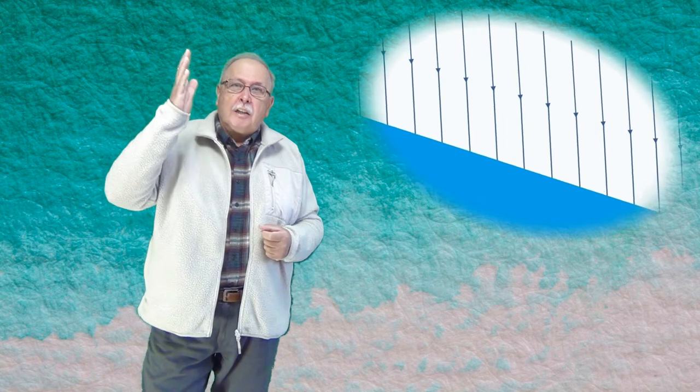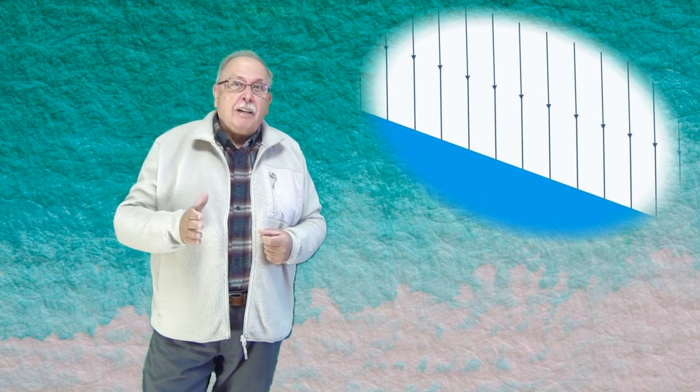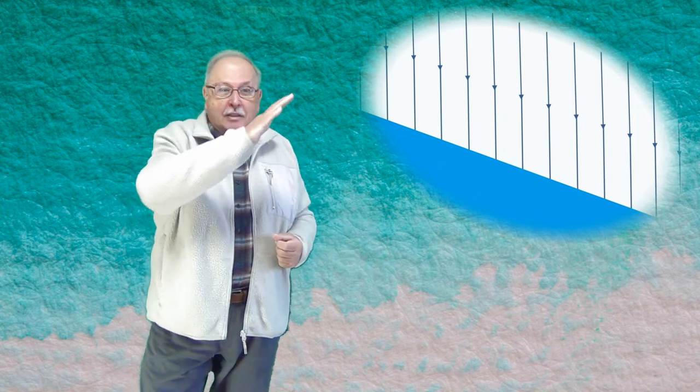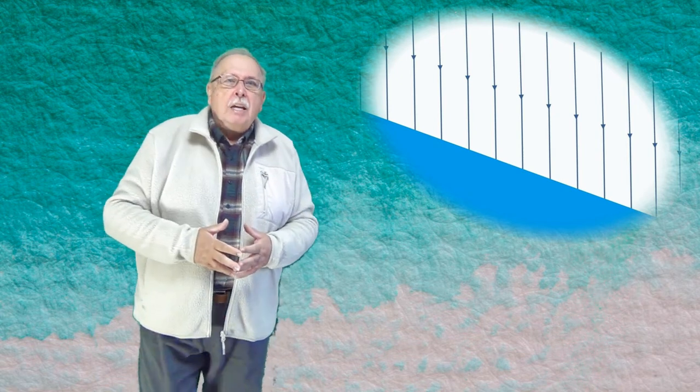Nu trebuie decât să rotim imaginea, desenul, până când liniile câmpului gravitațional vor fi pe verticală. Adică așa cum sunt în poziția noastră normală. Și acum, dacă ne uităm la desen, înțelegem de ce apa nu este în echilibru așa. Pentru că suprafața ei este înclinată și ea va începe să curgă.